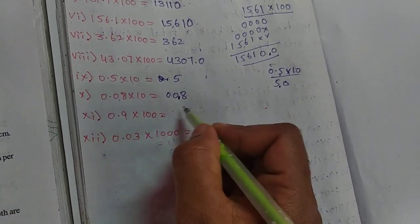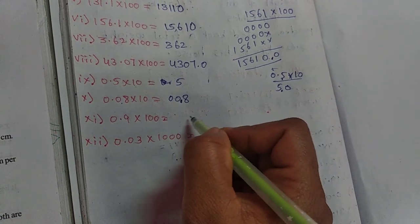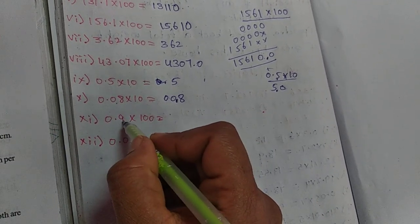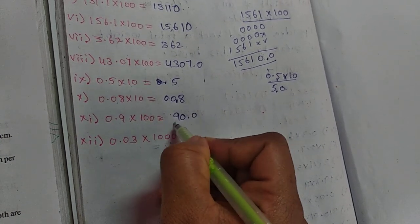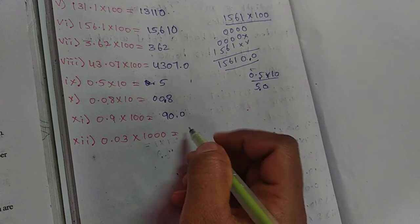Next, see this one: 0.9 into 100. Here we move to the right side 2 digits: 1, 2. So 90.0 is the answer.